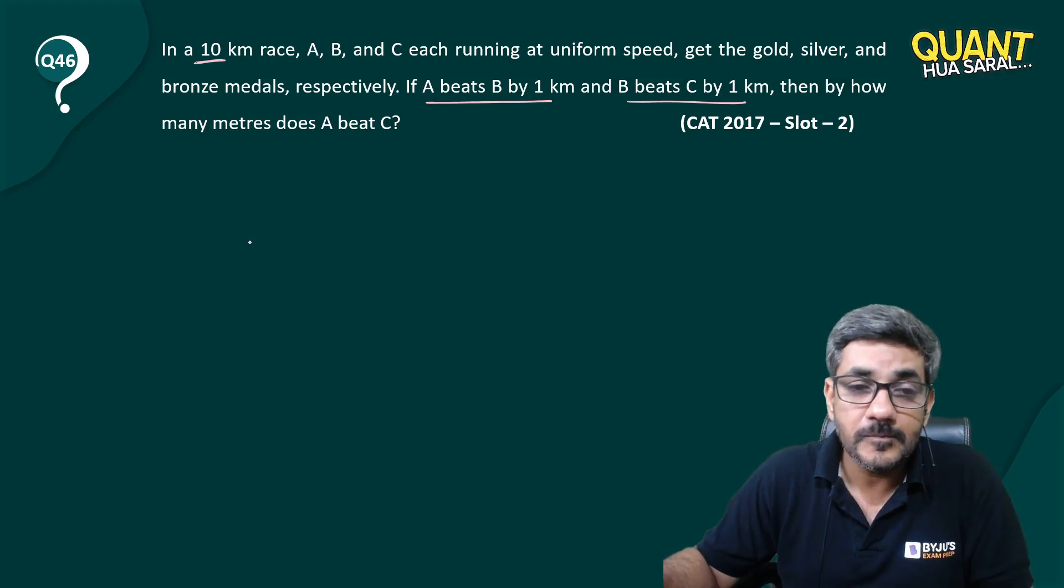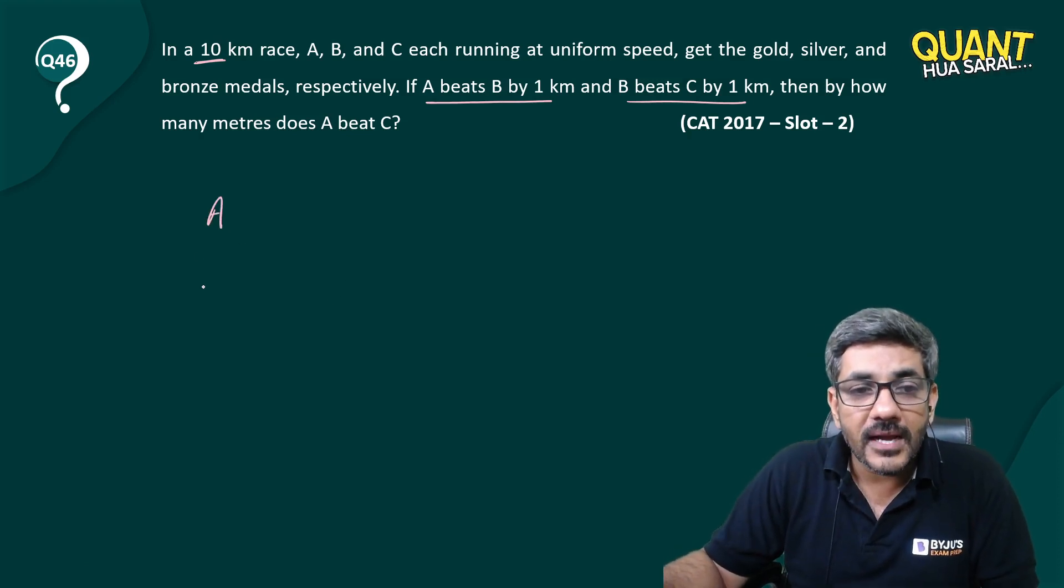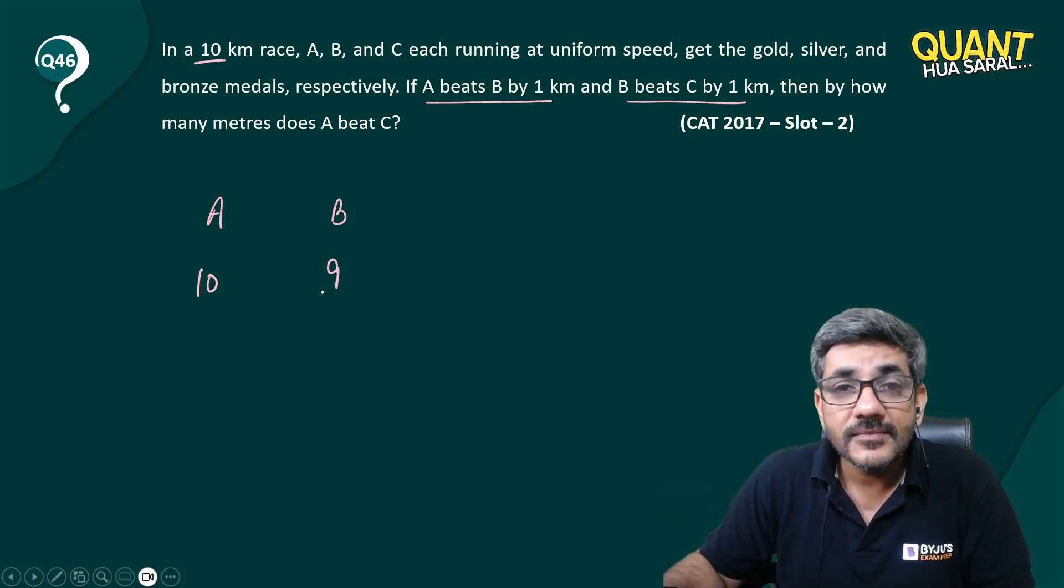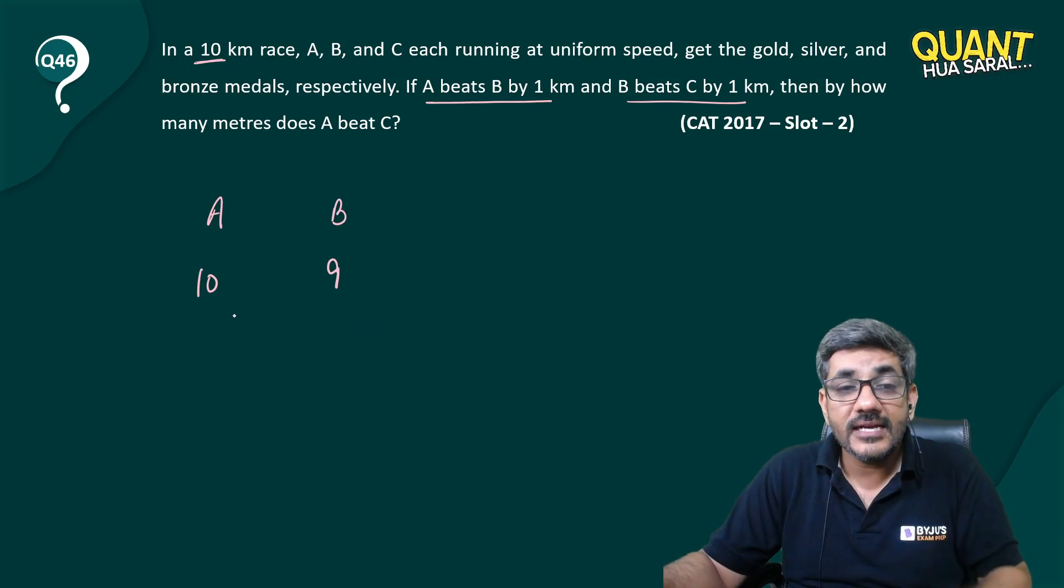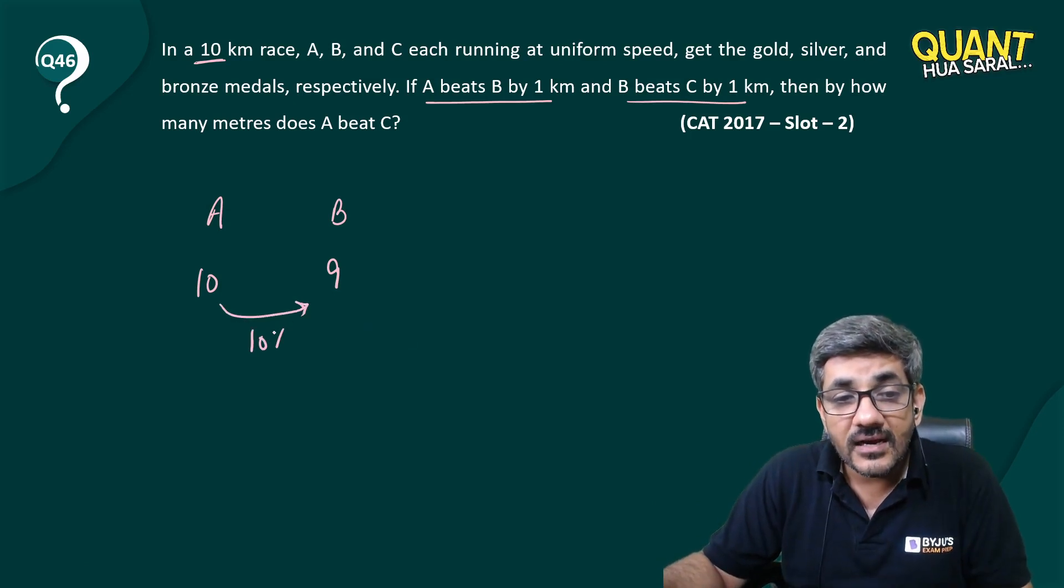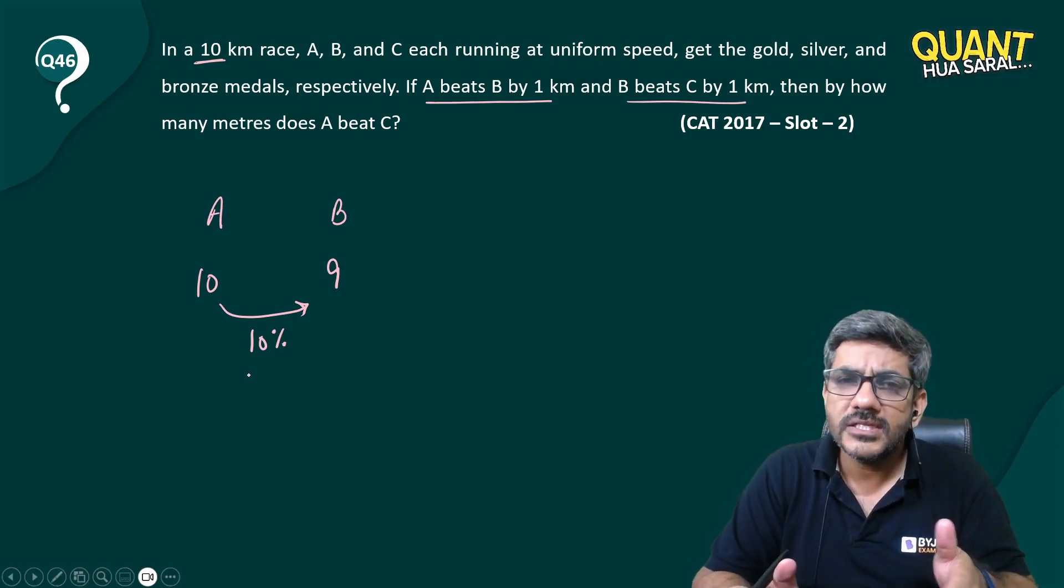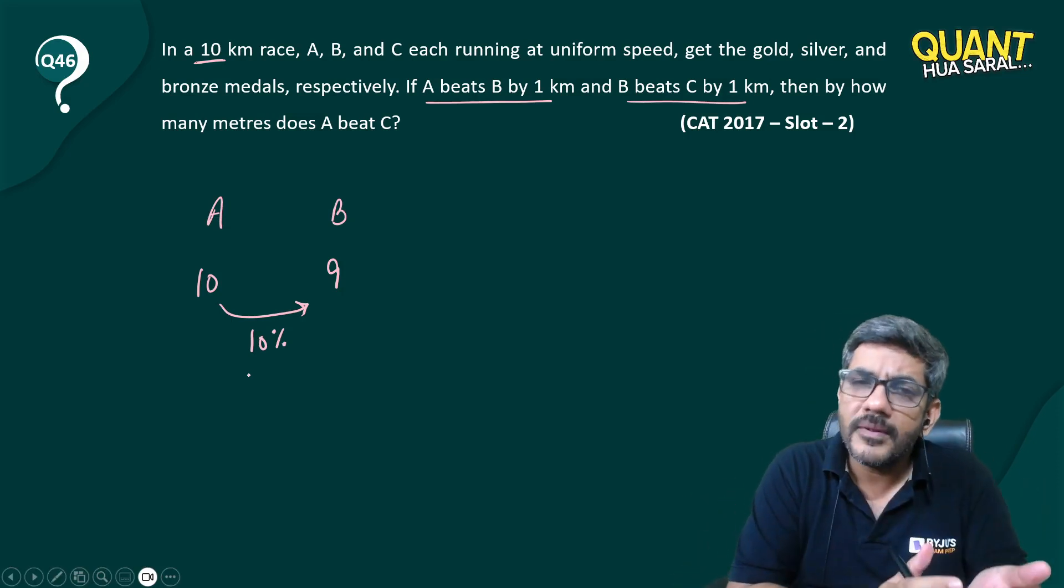meters does A beat C? Now if A beats B by 1 kilometer, that means when A covers 10, B covers 9, that is 1 kilometer less. So that means I can say that B covers 10 percent less than A. And if this 10 percent less would be there for any distance, when A would be covering 1